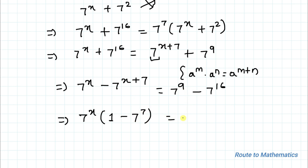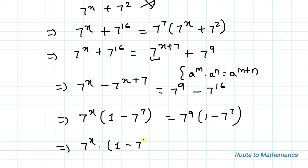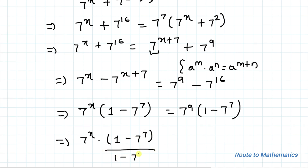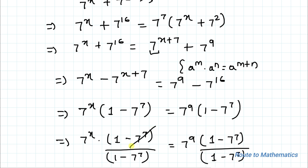Factoring out 7 to the power x: 7 to the power x multiplied by (1 minus 7 to the power 7) equals 7 to the power 9 multiplied by (1 minus 7 to the power 7). In the next step I will divide both sides by (1 minus 7 to the power 7), giving: 7 to the power x times (1 minus 7^7) divided by (1 minus 7^7) equals 7 to the power 9 times (1 minus 7^7) divided by (1 minus 7^7).